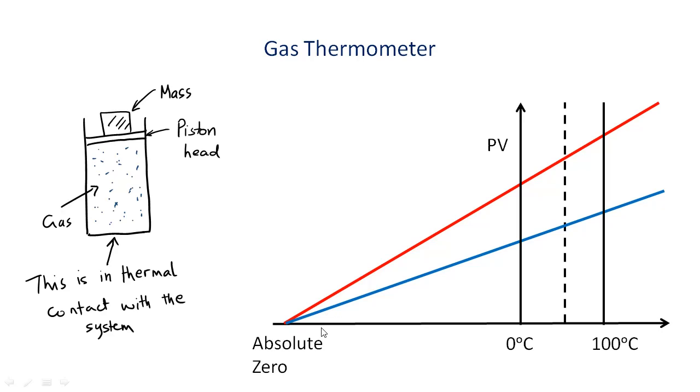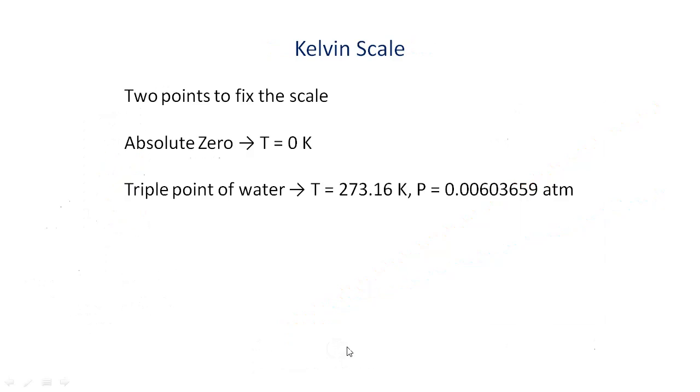This point is set to zero in the scale, known as the Kelvin scale. For other points on the Kelvin scale, rather than using the melting point or boiling point of water, we use the triple point of water. This is a unique combination of pressure and temperature, where liquid water, solid ice and water vapour can coexist. At this point, temperature is 273.16 Kelvin and partial vapour pressure is 0.00603659 Atm.